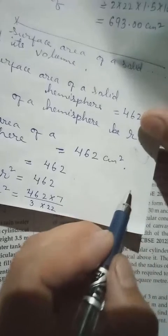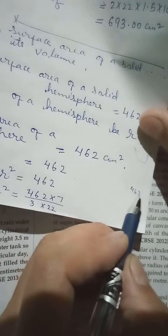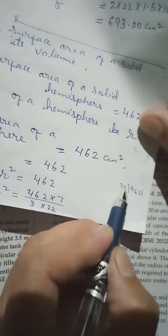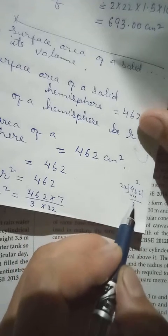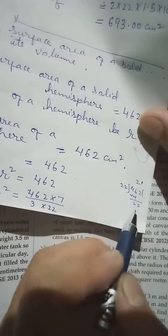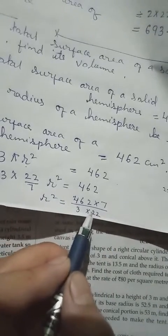So here this is even number, this is even number. If I divide 462 by 22, can I or not? 22 into 2 is 44, 6 minus 4 is 2, 22 into 1 is 22. So 22 divided into 462 we get equal to 21.